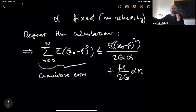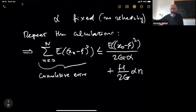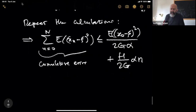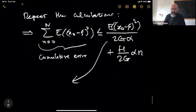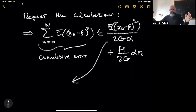Before going to the multi-dimensional case, let's discuss a slightly different situation where the number of steps N is fixed a priori — a version of the algorithm with a fixed budget of iterations and constant alpha. If we repeat the calculations with constant alpha, we get that the sum from n equals zero to N of the expectations of (x_n minus psi) squared is less than or equal to the expectation of the initial error squared divided by 2G, plus (H over 2G) times alpha times N. This gives us the cumulative squared error as a function of the fixed budget and constant learning rate.